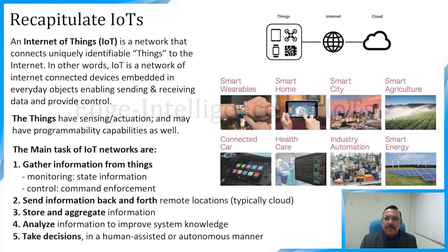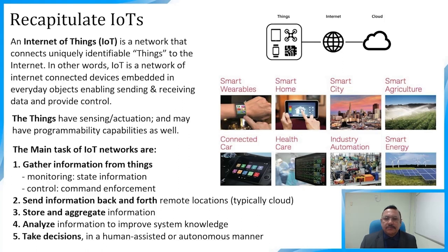Edge intelligence for IoTs. The Internet of Things is a network that connects uniquely identifiable things to the internet. IoT is a network of internet-connected devices embedded in everyday objects, enabling sending and receiving data and providing control. Things have sensing, actuation, and may have programmability capabilities. The main task of IoT networks is gathering information from things, sending information back and forth, storing and aggregating, analyzing, and taking decisions.